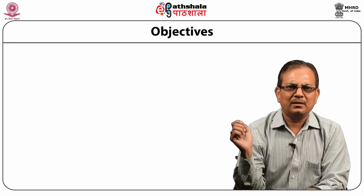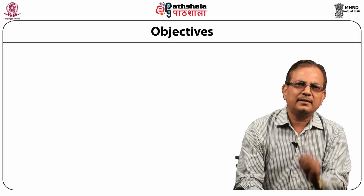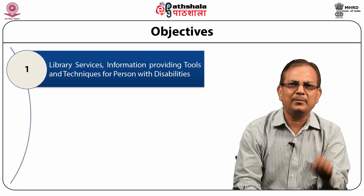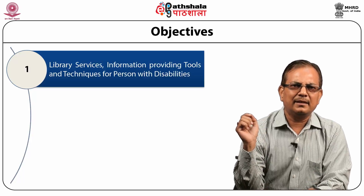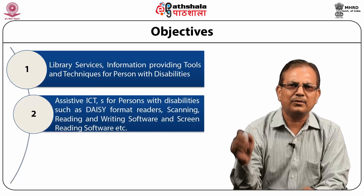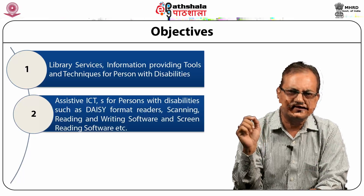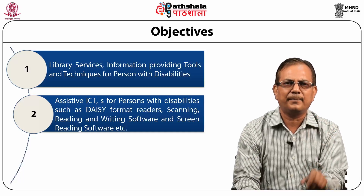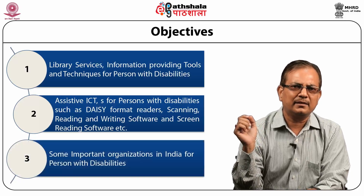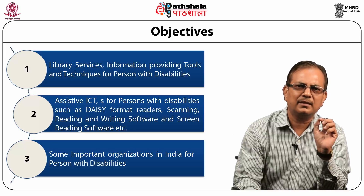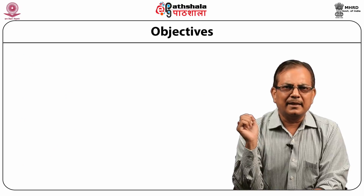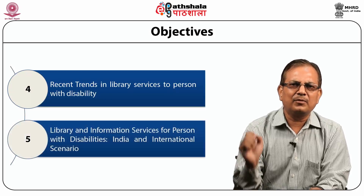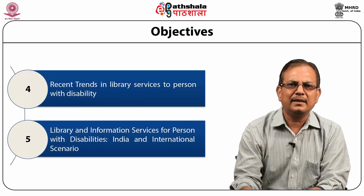Now let us discuss the objectives of this module. First is library services, information providing tools and techniques for persons with disabilities. Second is assistive ICTs for persons with disabilities such as DAISY format readers, scanning readers, and writing software and screen reading software. Another is some important organizations in India for persons with disabilities. Next is recent trends in library services to persons with disabilities, and library and information services for persons with disabilities — India and international.